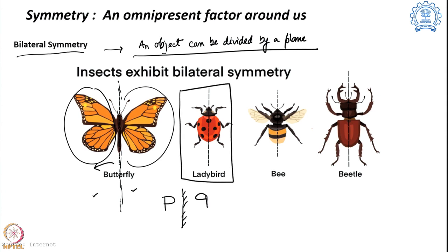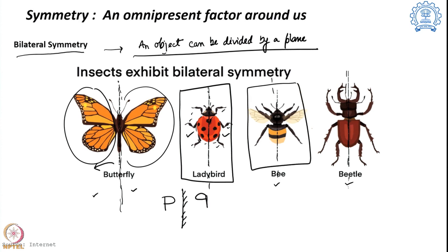Again, very similar to the butterfly — if I draw the line along this particular plane, both sides are the same including the shape of their legs, the number of their legs, and the pattern on the system. This is a bee, this is a beetle — we see the same trend. There is a plane of symmetry and on either side I see the same thing. Bilateral symmetry can be found in many different life forms and is one of the most important symmetries we observe.